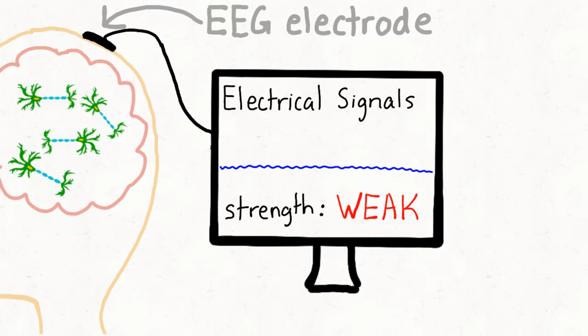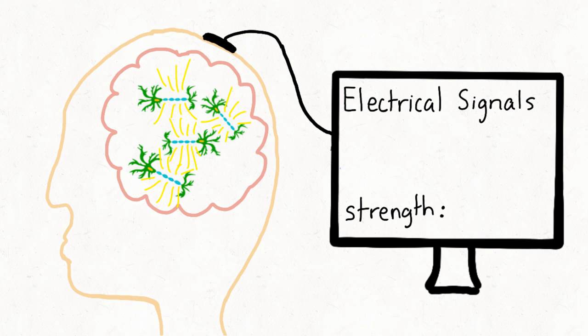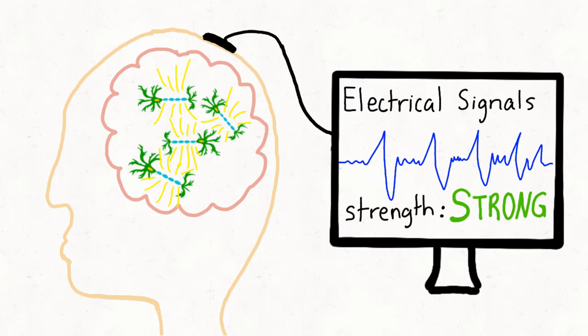So what exactly does EEG read in regards to these neural signals? Thankfully, many neurons typically fire and sink when an action occurs in the brain, and when this happens with parallel neurons, the electric field produced is strong enough to penetrate the scalp.